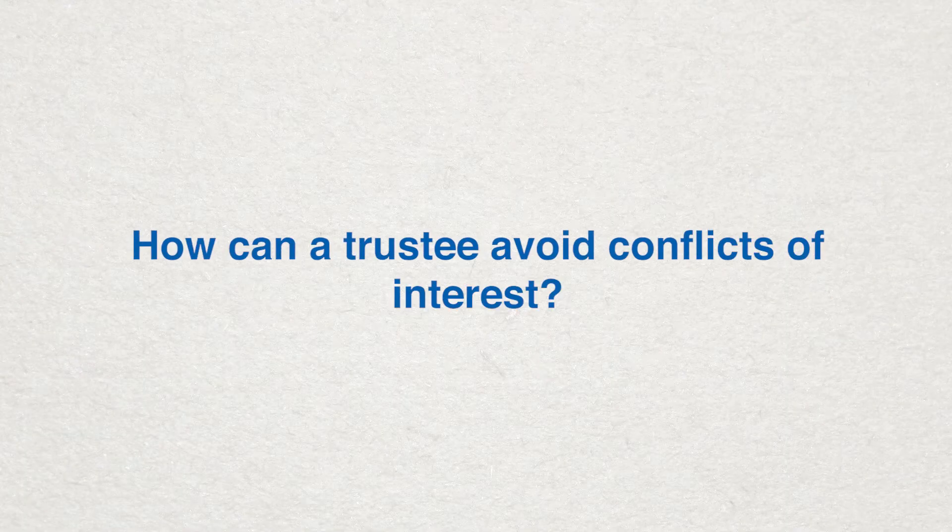How can a trustee avoid conflicts of interest? The best way for a trustee to avoid a conflict of interest is to be completely transparent about the transactions they're undertaking on behalf of the trust. Trustees are not prohibited from conducting transactions that benefit themselves, as long as the transaction also and primarily benefits the trust. If you take the right steps, including obtaining pre-approval from the court or the beneficiaries, you can legally complete a mutually beneficial financial transaction with the trust.